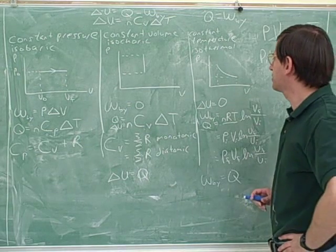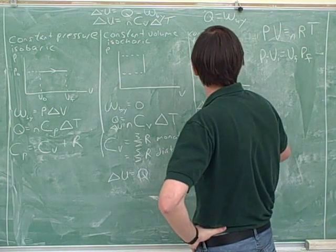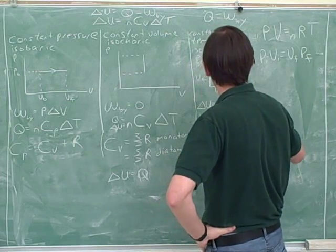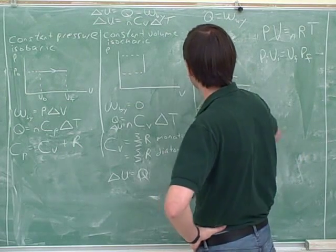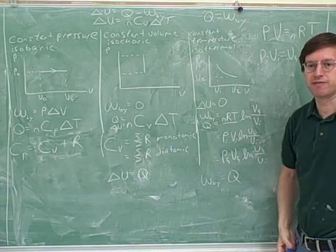Something that comes up a lot on tests is, notice that there's basically four points here. We've got P initial, V initial, and P final, V final. And oftentimes they'll give you three of these points and ask you for the fourth one.